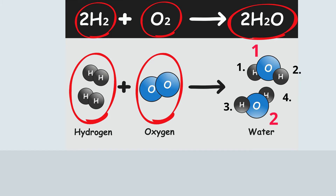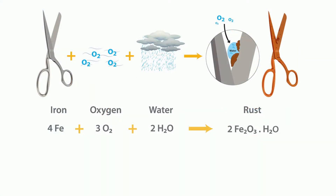Let's look at another example: the rusting of iron. Again, you have the same number of reactants and products.